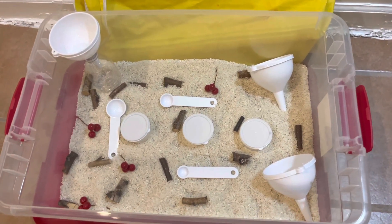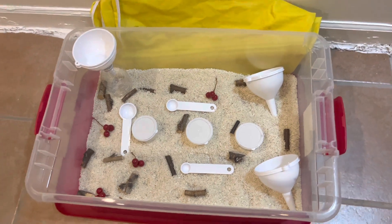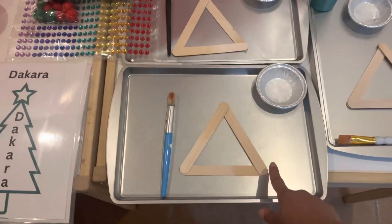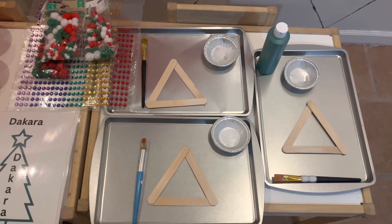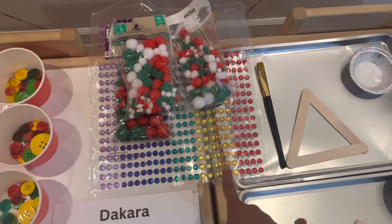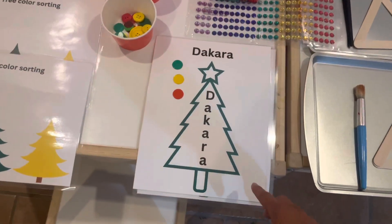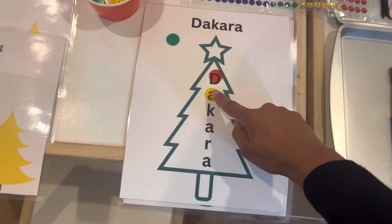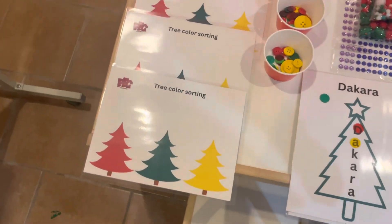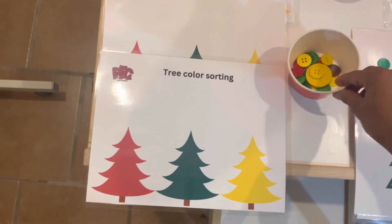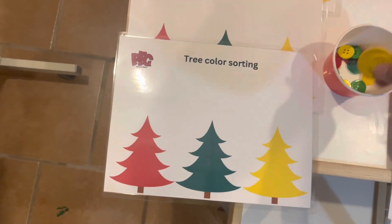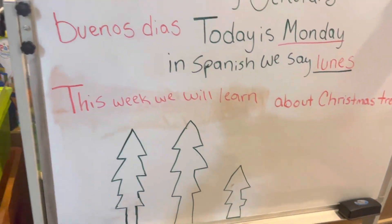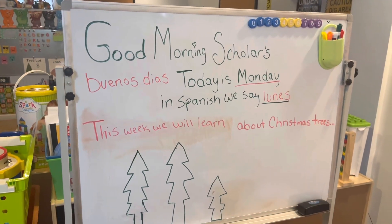Moving along, we have our sensory bin — just a really simple sensory bin where the children love to scoop, pour, and transfer. Moving along, we have a two-part Christmas tree craft where the children have to paint the popsicle sticks green and then we're going to decorate them once they're dry with rhinestones and pom-pom balls. We also have a name recognition activity where we use counters to discuss their names. Then we have our tree coloring sorting activity where the children match buttons to the correct color tree. Yes, guys, these are all of our activities for our Christmas tree theme here at PFC.